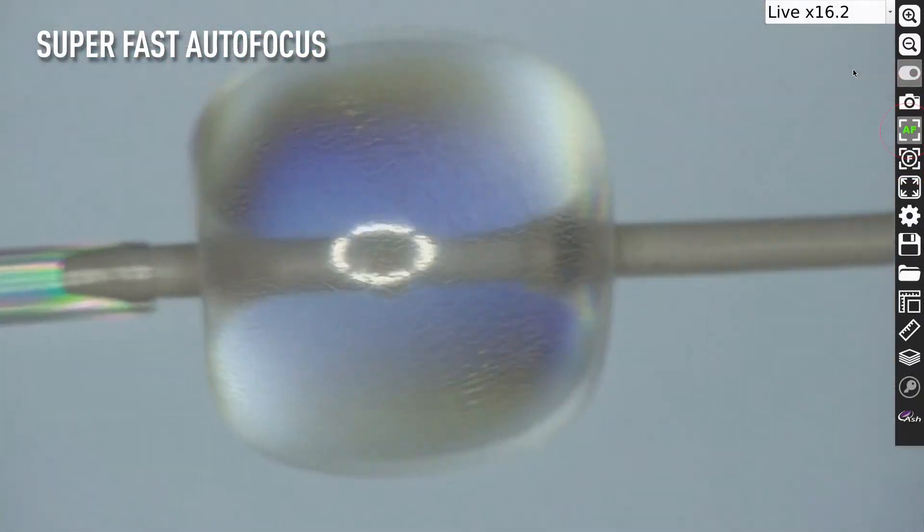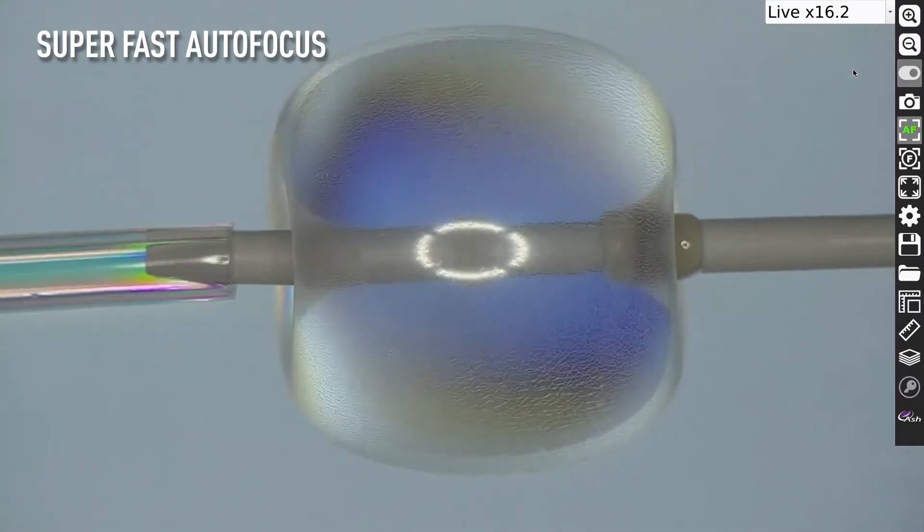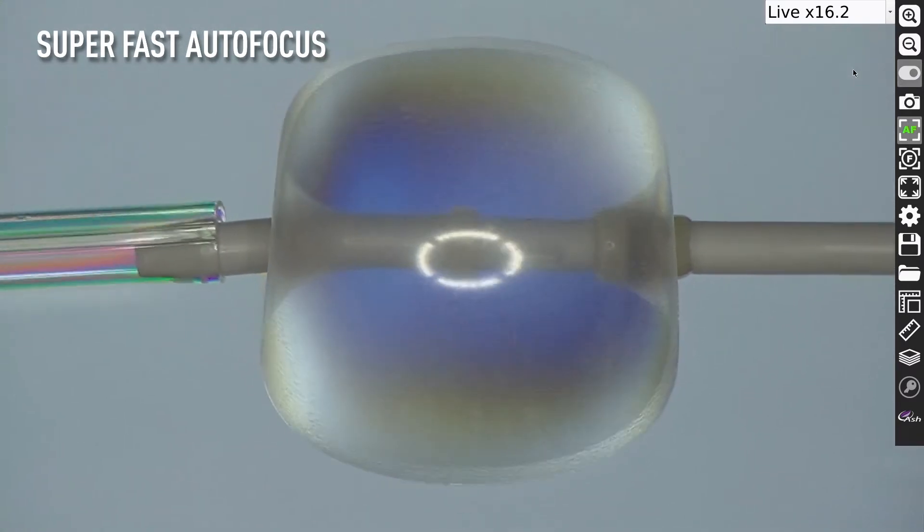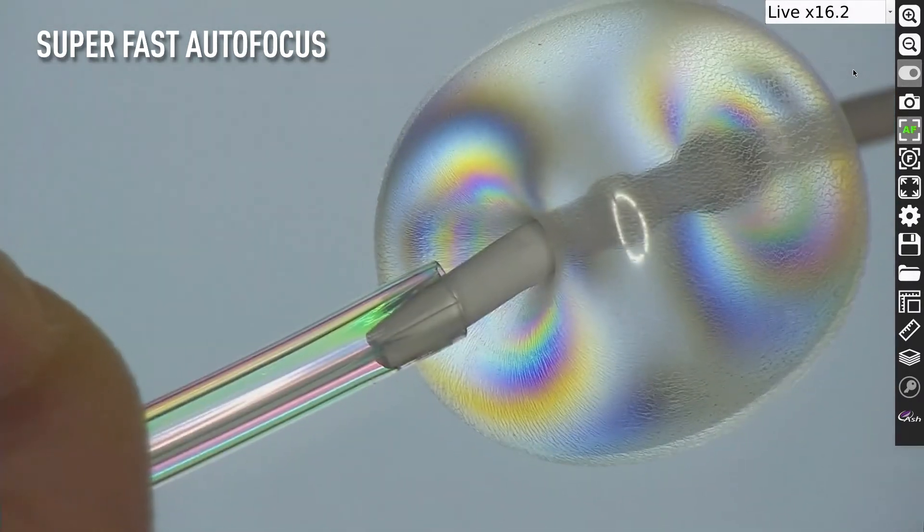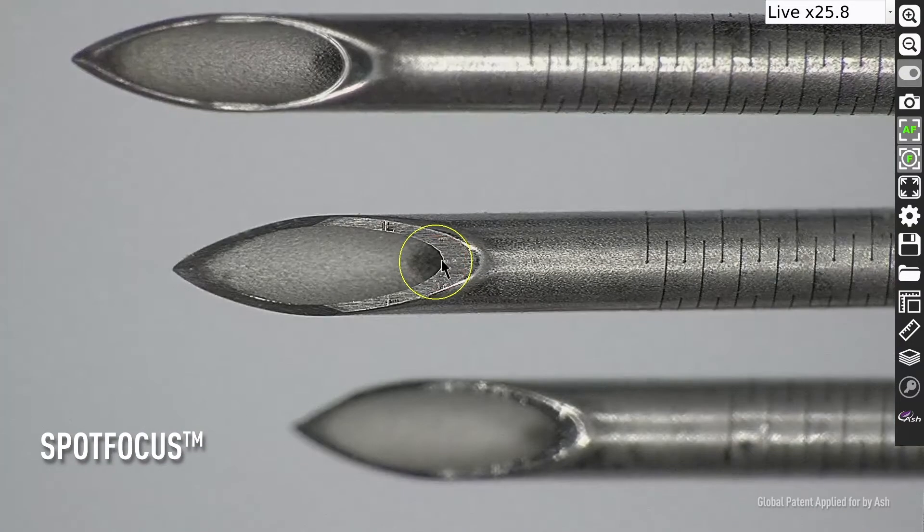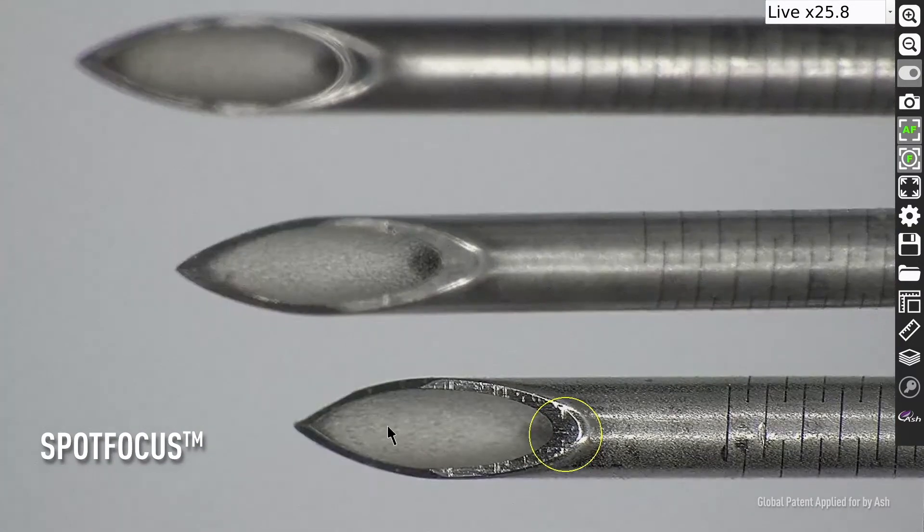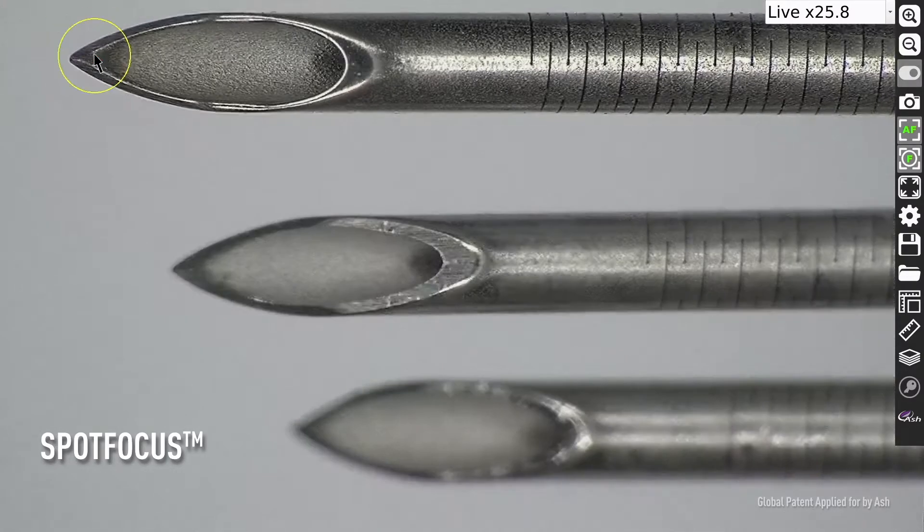The ASHCAM focus time is super fast. Place any part under the camera and it will immediately adjust the focus, allowing you to seamlessly inspect your part, without having to adjust manual focus or change the height of the part. Our new Spot Focus feature will rapidly focus on the part, improving focus accuracy, reducing human error and speeding up your inspection time.